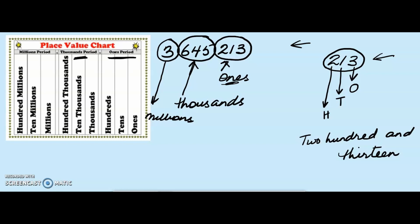Let us take out the digits from my thousands period. 6, 4, 5 belong to this period. Within this period, my 5 belongs to the 1s place value, my 4 belongs to the 10s place value, and my 6 belongs to the 100s place value. So to read that period, it is going to be 645.